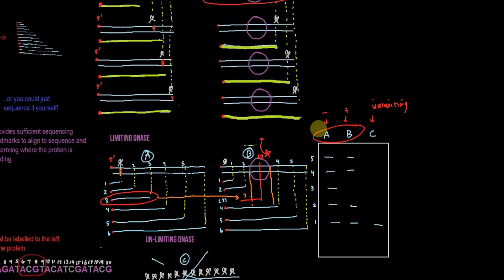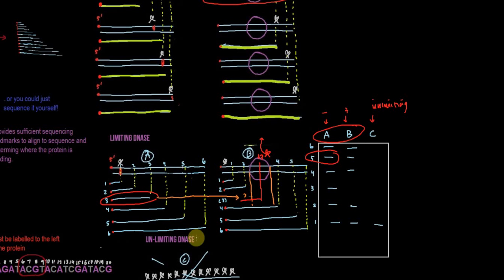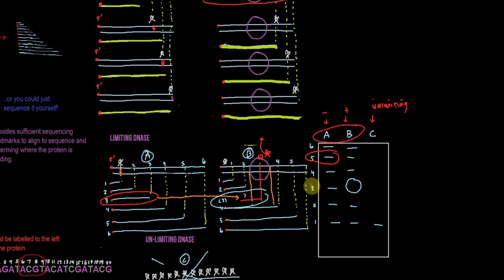In lane A, we would expect to see each band be one nucleotide different in length, forming a ladder. If the DNA is labeled on one end, number six will be the longest band up at the top and number one will be the shortest band at the bottom. We should expect to see one cut at every nucleotide with no protein protecting. In lane B, when we have a protein binding, we're going to be missing a couple of bands where that protein is bound. We'll know the protein is bound here — it's covering up nucleotide three. This is something I was really trying to emphasize: we use a limiting DNase treatment so we only get one cut per piece.